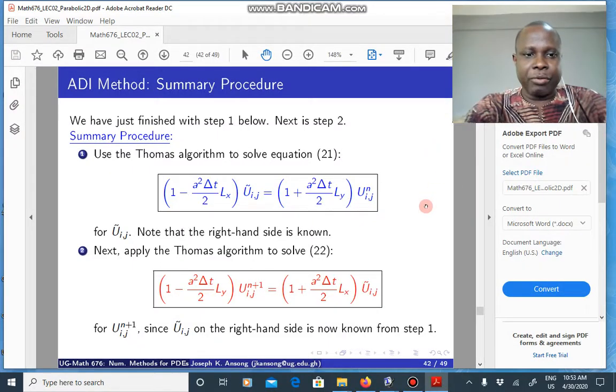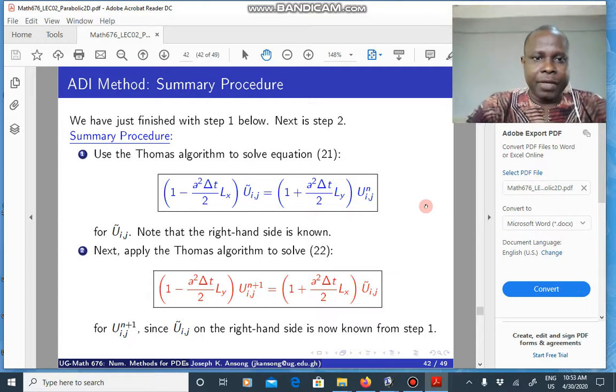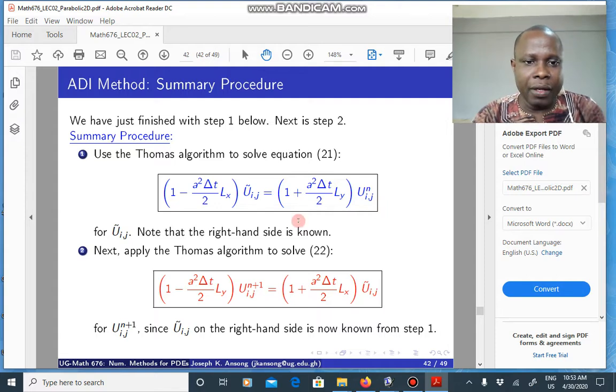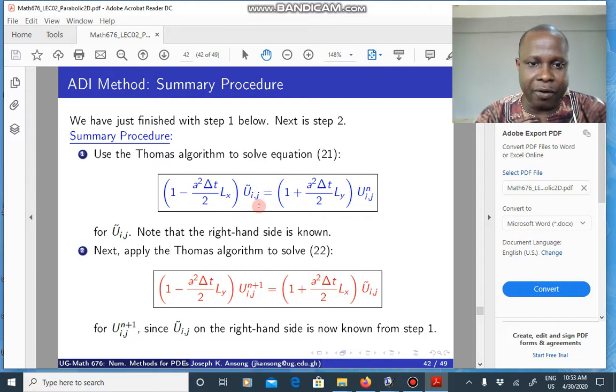Hello, in this lecture we want to continue with our illustration of the ADI approach using a very simple stencil which is six nodes in the x direction and five in the y. We showed that we can compute for u tilde by sweeping in the horizontal direction and you get a system of tridiagonal matrices which you can solve.